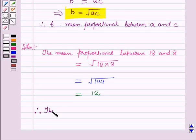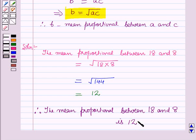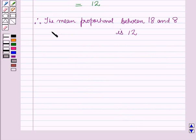Therefore, the mean proportional between 18 and 8 is 12. So this is the solution for the given question, and that's all for this session. Thank you.